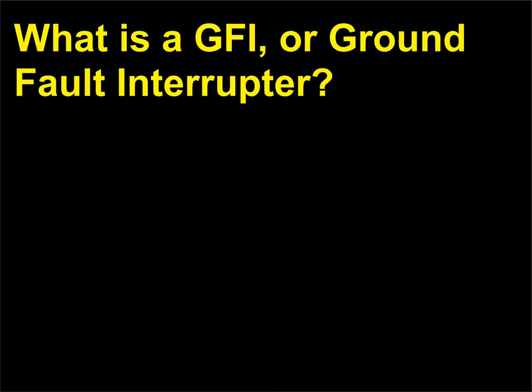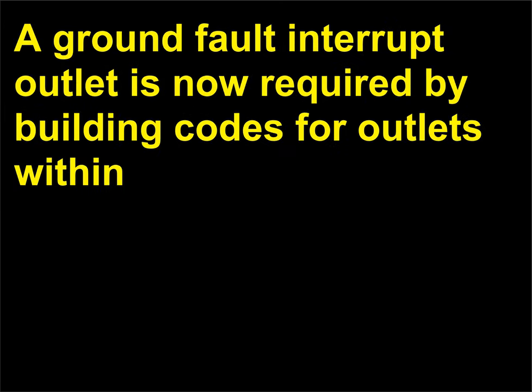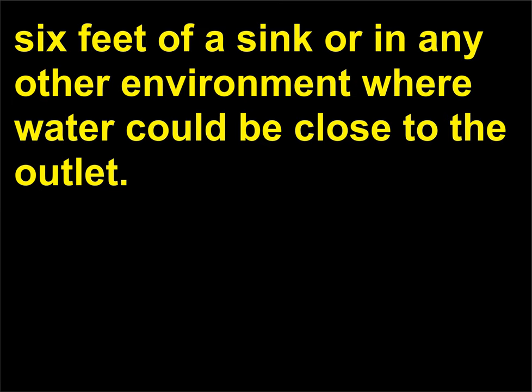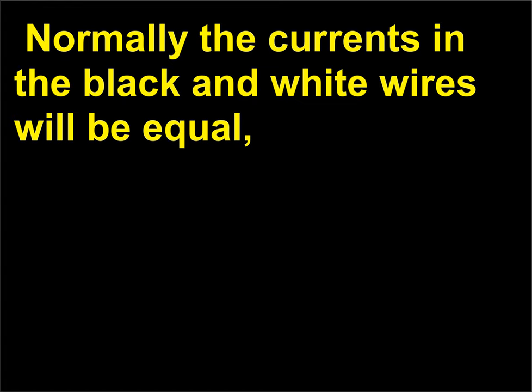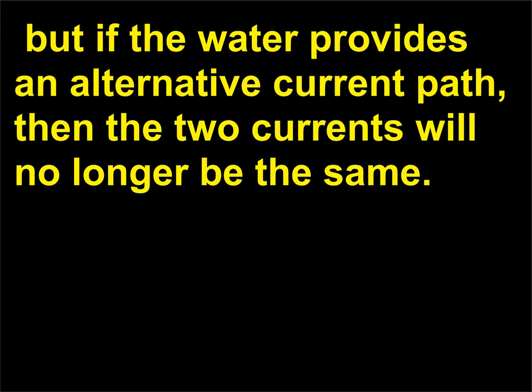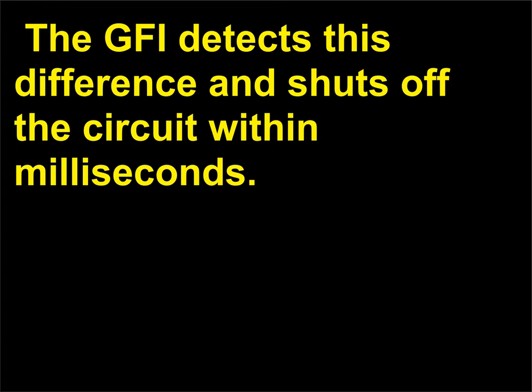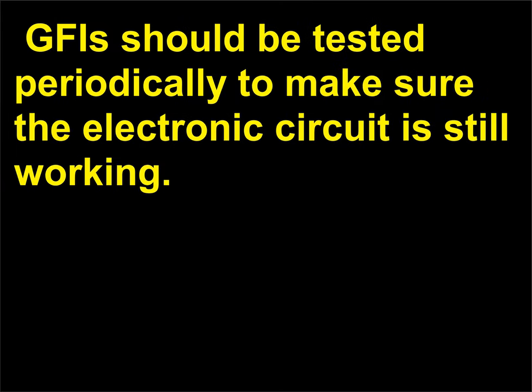What is a GFI, or ground-fault interrupter? A ground-fault interrupter outlet is now required by building codes for outlets within six feet of a sink or in any environment where water could be close to the outlet. Normally the currents in the black and white wires will be equal, but if water provides an alternative current path, the two currents will no longer be the same. The GFI detects this difference and shuts off the circuit within milliseconds. GFIs should be tested periodically to make sure the electronic circuit is still working.